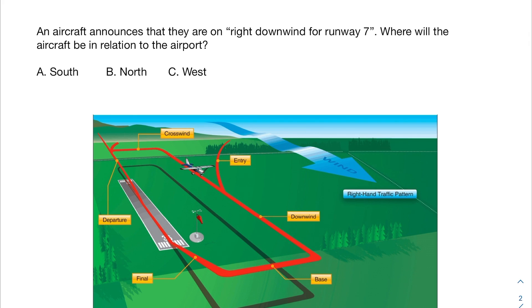Let's go ahead and look at another practice problem — feel free to pause the video, solve it yourself, and then continue. We have an aircraft that announces they are on right downwind for runway seven. Where will the aircraft be in relation to the airport? Let's highlight what the pilot said: right downwind for runway seven.